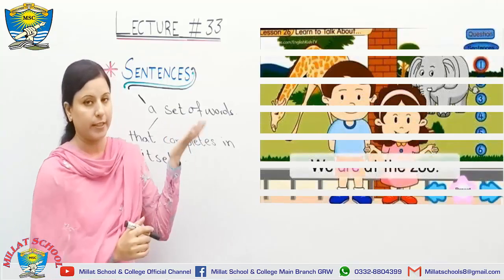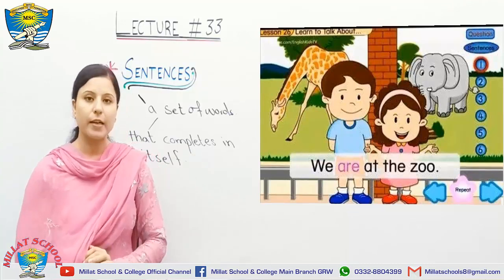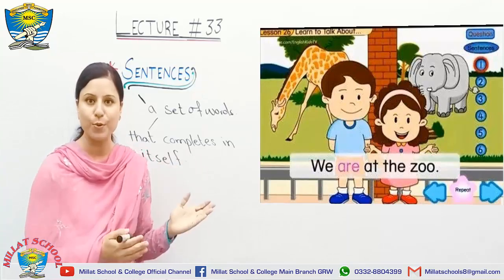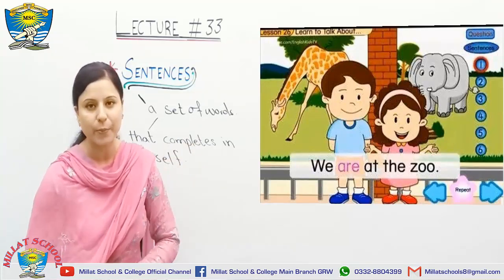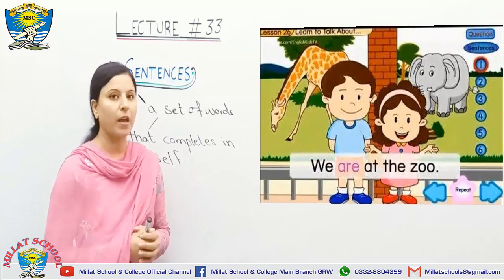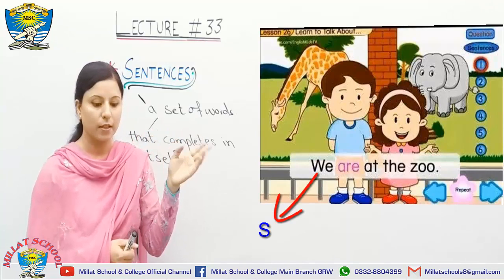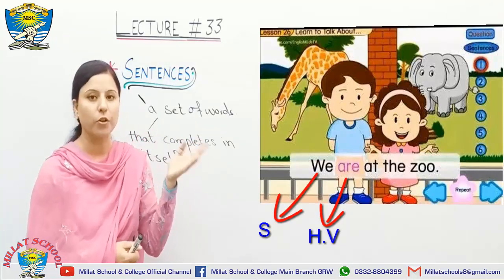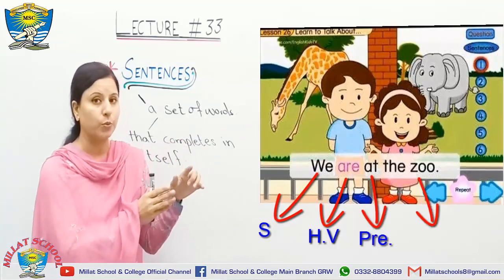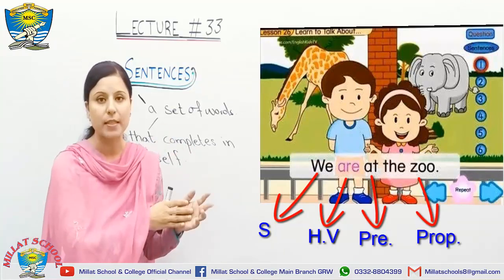For example, you can see in this picture that the children are saying 'We are at the zoo,' which is every child's favorite place. Let's pick out this sentence: 'We' is the subject, 'are' is your auxiliary verb — your helping verb — 'at' is your preposition, and 'the zoo' is your proper noun, which tells us the name of the place.